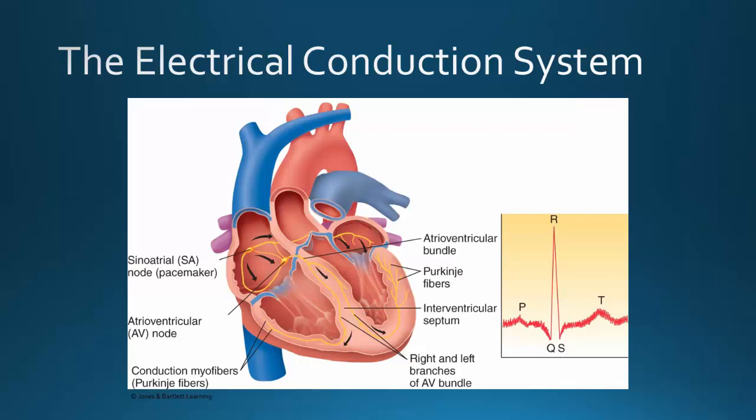Many things can affect the electrical conduction system — physical issues with the conduction system itself such as SA node or AV node problems — or electrolyte imbalances such as hyperkalemia, hypernatremia, hypokalemia, hyponatremia, hypercalcemia, or hypocalcemia. All of these will affect cardiac function.